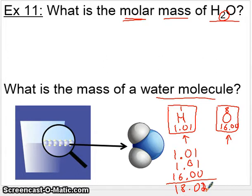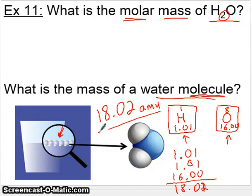18.02 for the mass of a water molecule, so 18.02. Now, if you have a molecule, remember, a molecule is just an individual unit, a tiny little unit of water. This one will have the units of AMU, atomic mass units. Remember, we use this unit to find the mass of an individual element or an individual atom of an element. So we can do the same thing for an individual molecule.